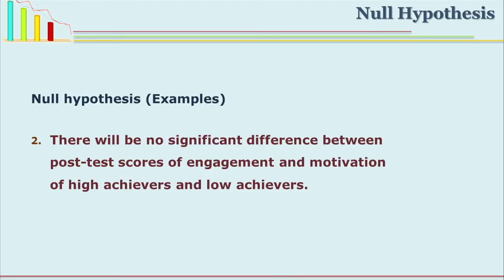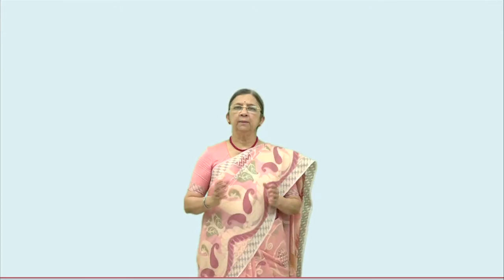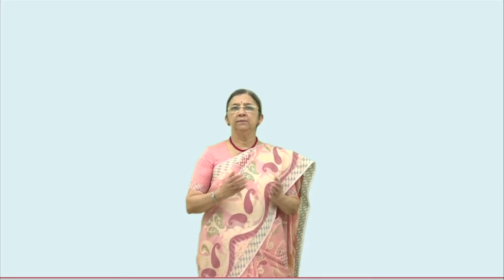Another example: there will be no significant difference between post-test scores of engagement and motivation of high achievers and low achievers. So there are two major groups — high achievers and low achievers — and the researcher is interested to find out whether they differ on these two criteria. The null hypothesis is set up and the researcher is trying to reject that null hypothesis by using certain statistics.